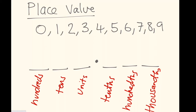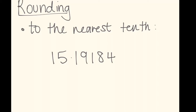It's really important that you remember what those place values represent. Let's move on to rounding. You might get a question that asks you to round to the nearest tenth. And you'll be given a number like 15.19184. The first thing you need to do is recognize which number is in the tenths place. So you need to notice that the one — the first number after the decimal point — is the tenth. And I need to round off to that one.